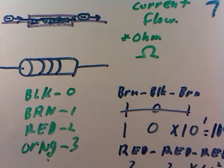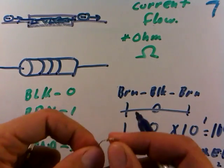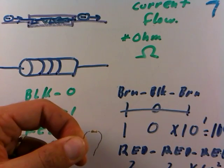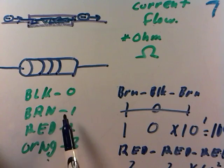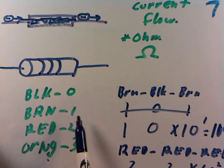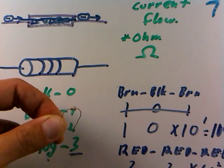I have a third one. Maybe we'll just leave an exercise for you to figure out here. This turns out as a brown, black, orange. So brown here is one, black is zero, so ten, times ten to the orange, which is three, times ten to the third. So this is a 10,000 ohm resistor.